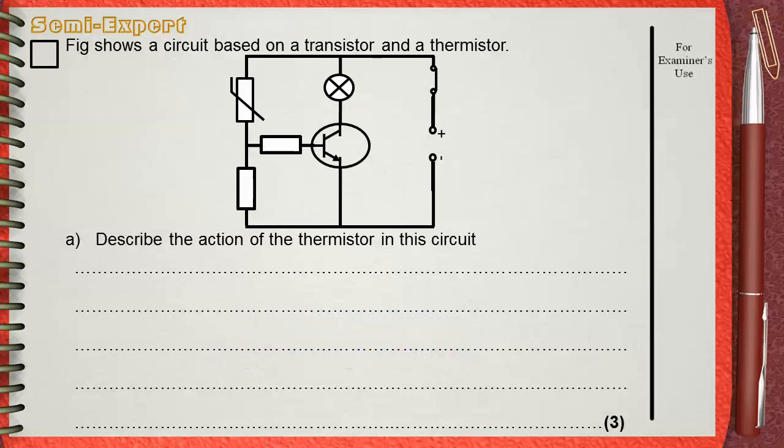The idea of this type of circuit is repeated many times because of its importance. Remember again, normally the transistor is off, that's why there is no current flowing in the lamp, so it's off.